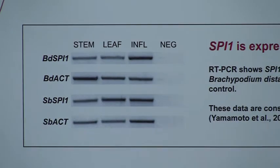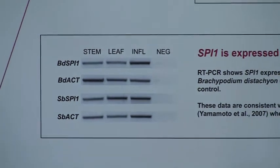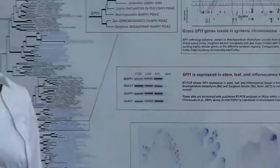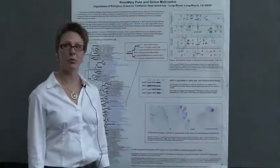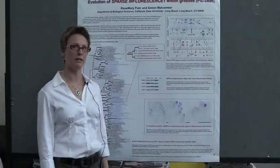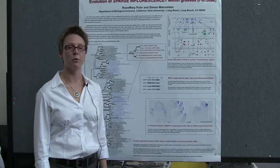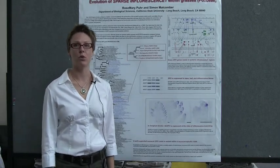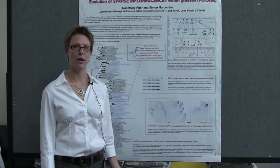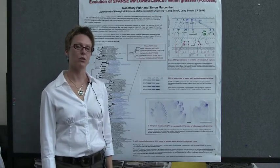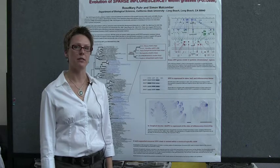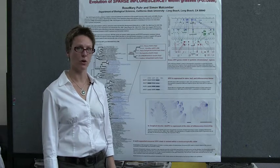So we're seeing SPI1 expression in essentially all the sampled organs of the plant, which is consistent with what's published in maize and with what's published in rice, where SPI1 is seen in all sampled organs.